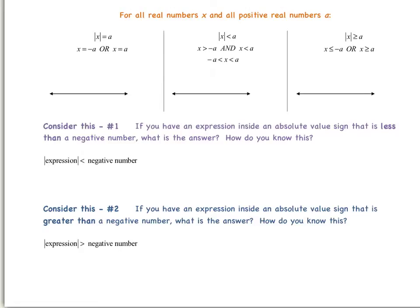Now let's look at absolute value inequalities. First we're going to look at the absolute value of x is less than a. Whenever we have an absolute value that is less than a number, we have what is called a conjunction. A conjunction is a compound statement that uses the word 'and.' What that looks like for us is we're saying that x is going to be greater than negative a and less than positive a. On a number line, it would look like that. Remember, we use open dots because it's just greater than or less than.